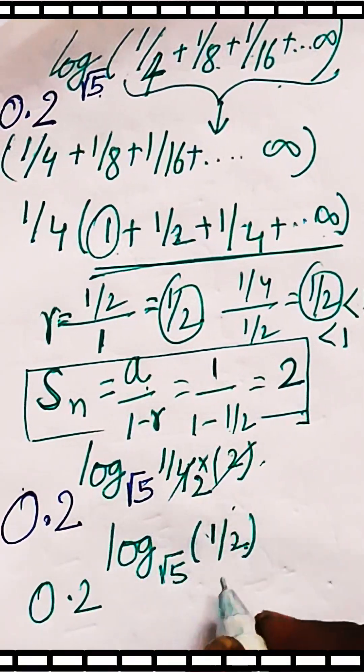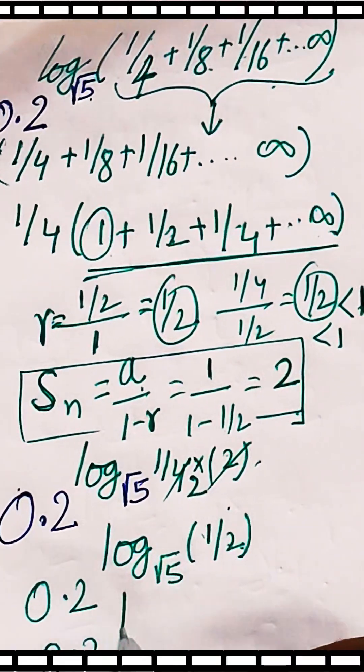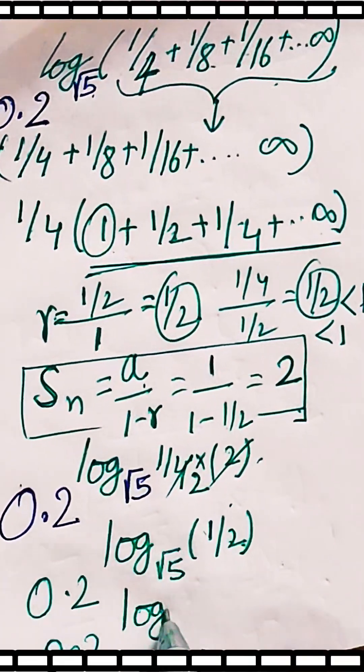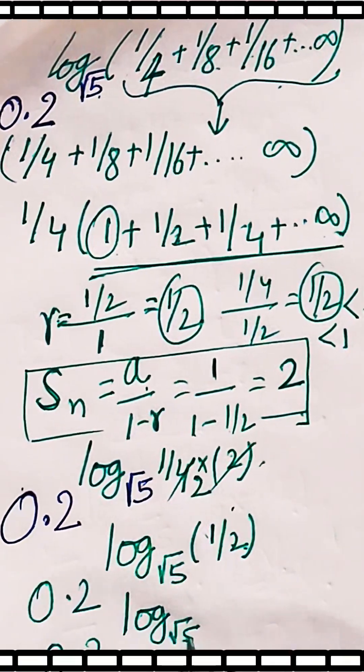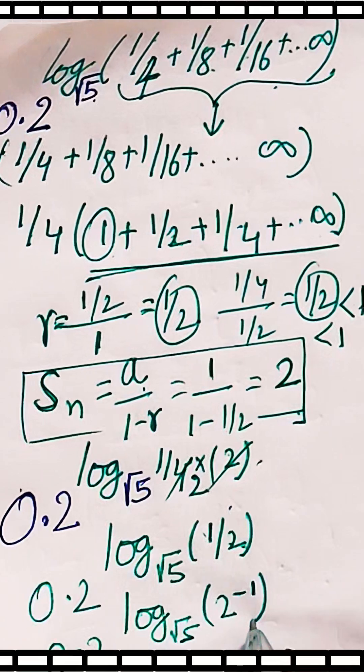1/2 can be written as 2 power minus 1. So we can write 0.2 raised to log base root 5 of 2 power minus 1.